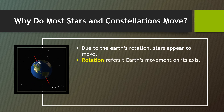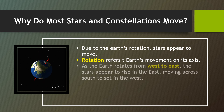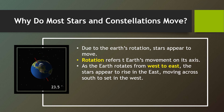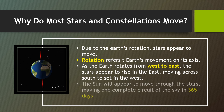Rotation refers to the Earth's movement on its axis. As the Earth rotates from west to east, the stars appear to rise in the east, moving across south to set in the west.